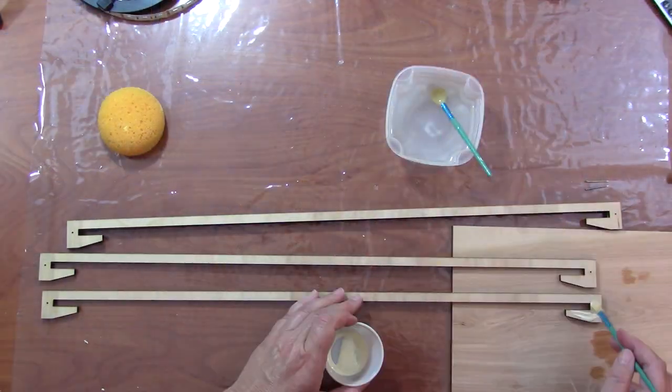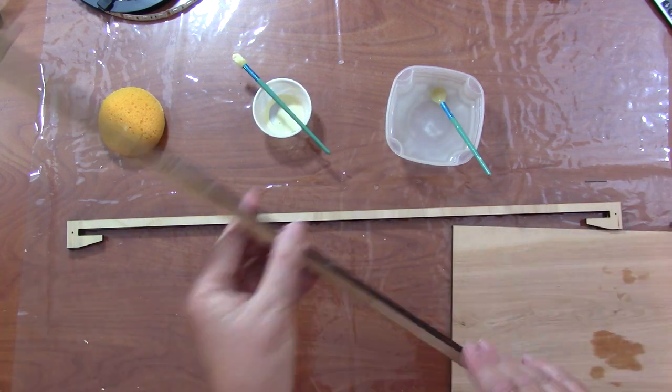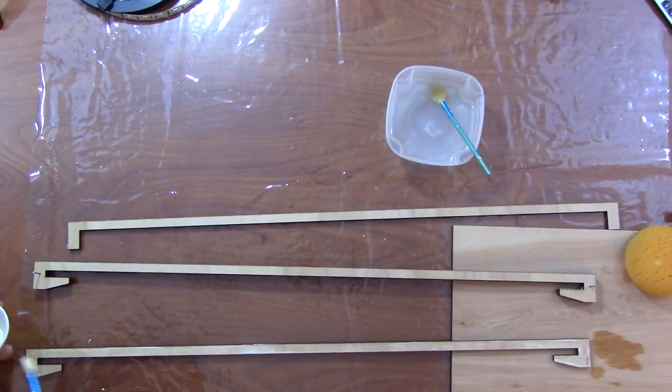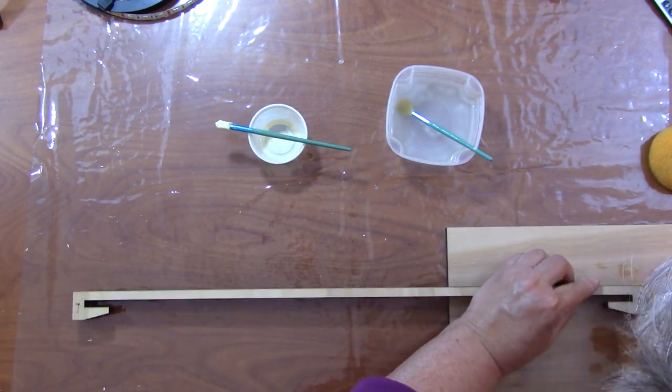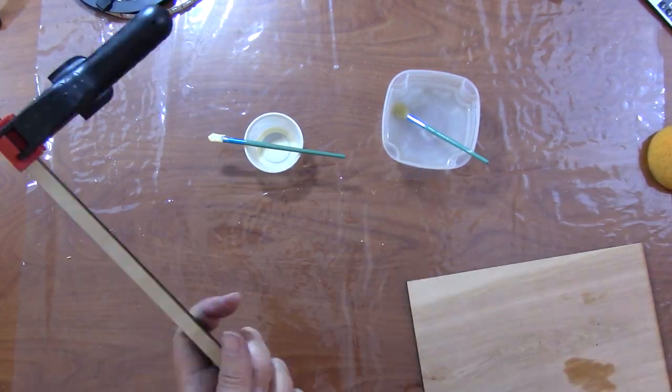I glue the back supports together in a process exactly like I showed for the legs. These have nail holes as well. The nails actually extend a little to help them hold to the board when I glue that on later.